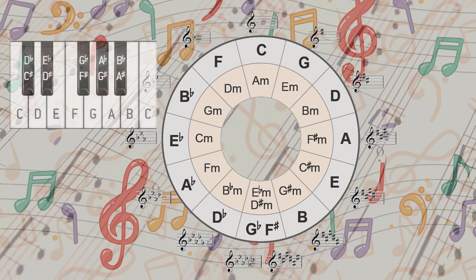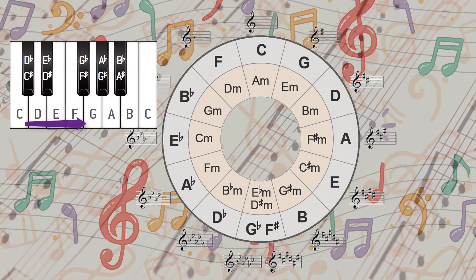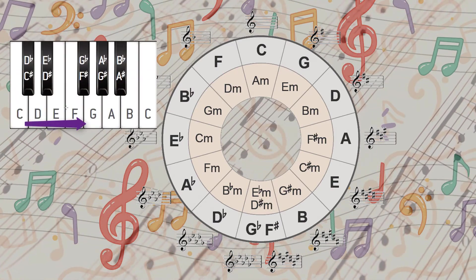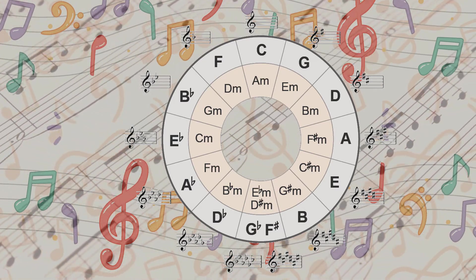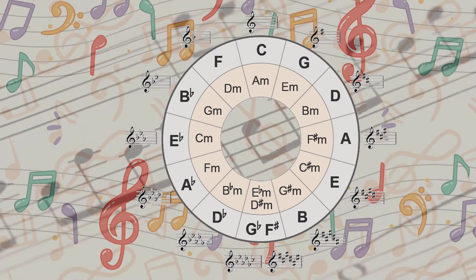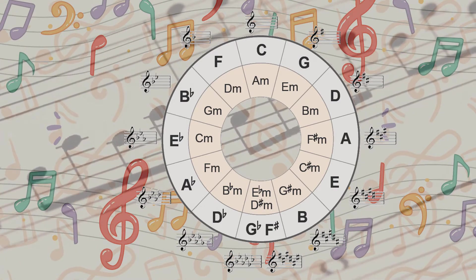From a keyboard view, a perfect fifth is a distance of seven half steps. This could also be viewed as five scale steps, remembering to count the starting key as number one.